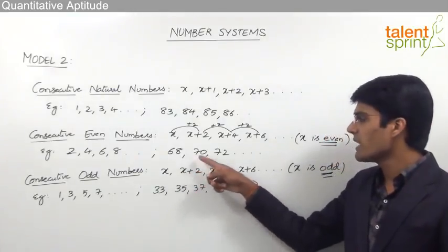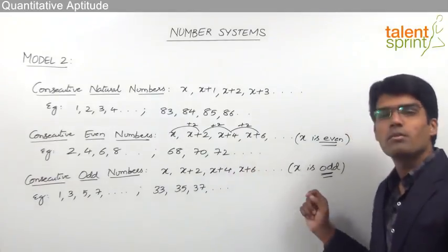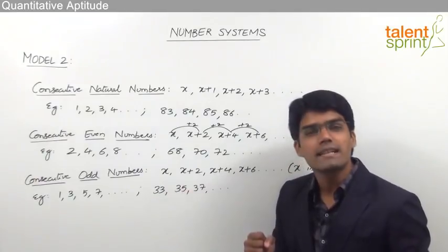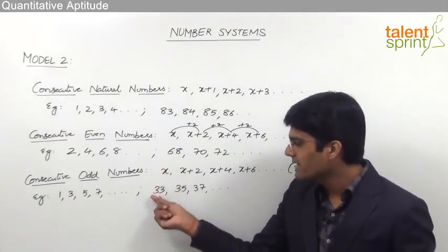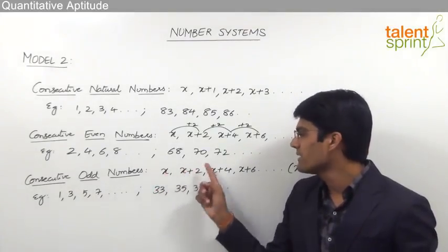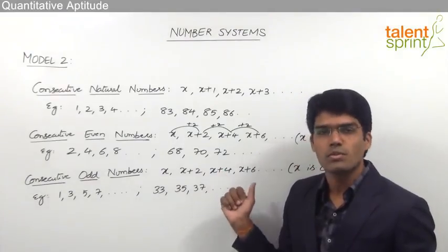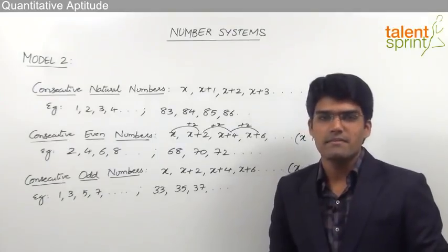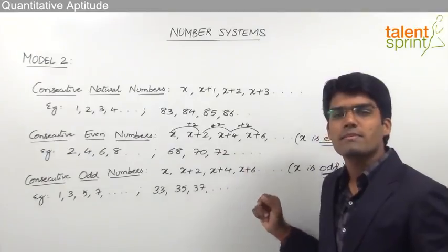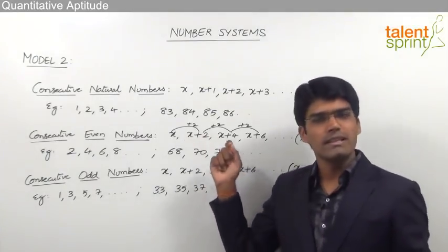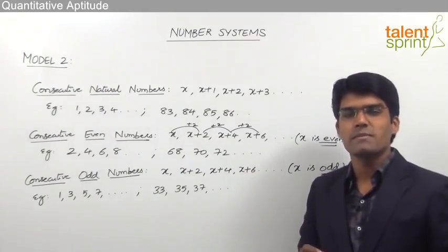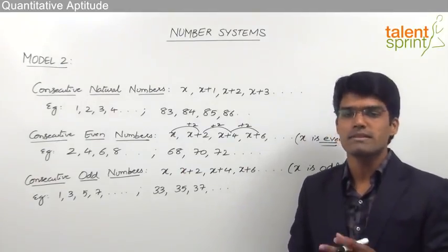For example, 33, 35, 37 are three consecutive odd numbers. If x is 33, then x+2 is 35 and x+4 is 37. The key point: consecutive even and consecutive odd numbers are both represented as x, x+2, x+4 and so on — where x is even for consecutive even numbers and x is odd for consecutive odd numbers. The difference between pairs is always 2.